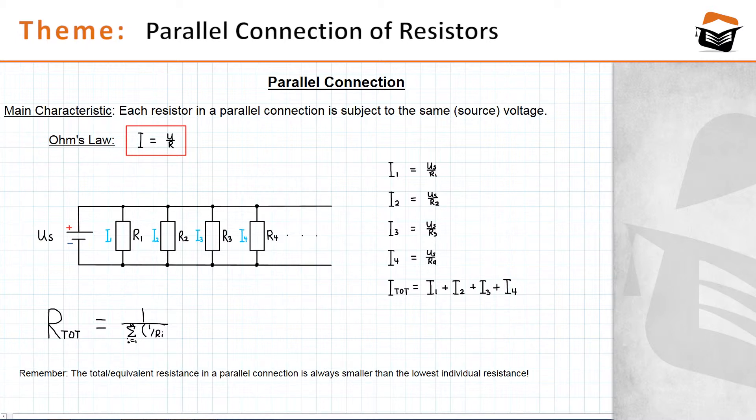That sounds a little complicated. So what I'm going to do here is replace that statement by 1 over 1 over R1 plus 1 over R2 plus 1 over R3 plus 1 over R4 and so forth. That's how you compute the total or the equivalent resistance in a parallel connection.